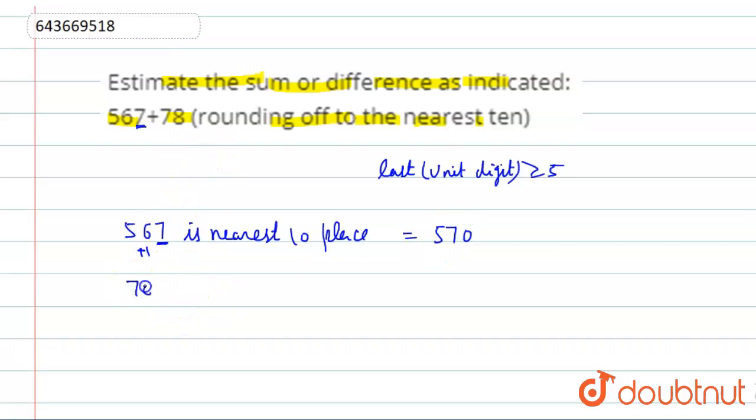Now 78, nearest to tens place. This will be equal to 8. 8 is also greater than 5, so we will add 1 to the tens place. So this will be equal to 80.